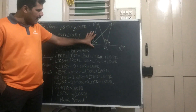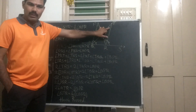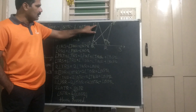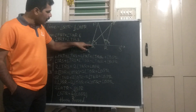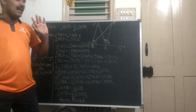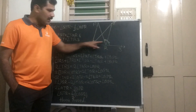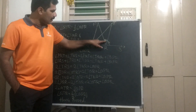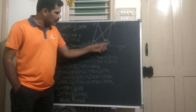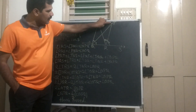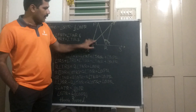The problem given is: from the diagram, we have to prove angle QTR is equal to half of angle QPR. What they have given is that two angles PRT and TRS are equal, and angles PQT and TQR are also equal.